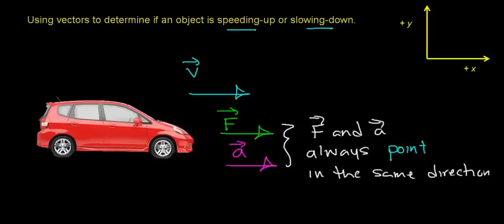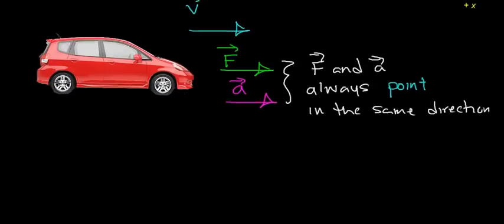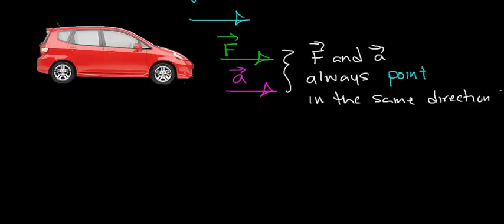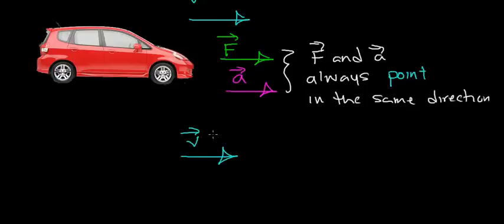Now the question becomes: is this object speeding up or slowing down? Because the word acceleration in the English language is somewhat confusing. We tend to think of acceleration as always speeding up, and then we use the word deceleration to indicate that the velocity of an object is decreasing. But in physics, acceleration only means a change in velocity. So what you need to do is look at which direction the vectors are pointing.